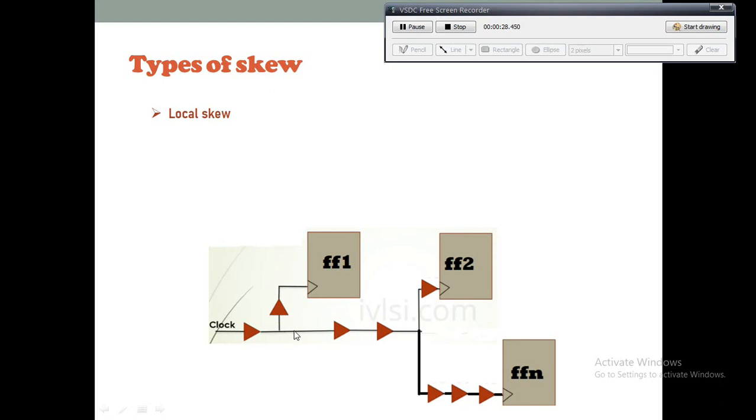Okay, so these are the two flip-flops FF1 and FF2. So you can see the latency difference between the two flip-flops. Suppose all the clock buffers are taking 10 picoseconds each. So you can see first FF1 will take 20 picoseconds, and FF2 will take 40 picoseconds. So the local skew is nothing but the difference between FF1 and FF2, that will be 20 picoseconds.